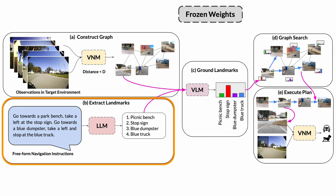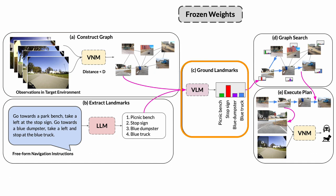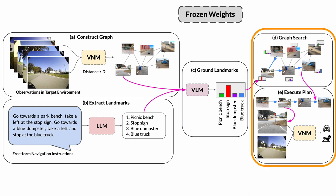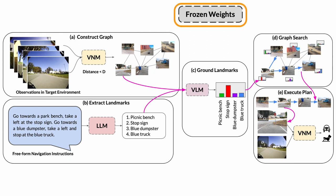Putting it all together: the free-form textual instructions are parsed by the language model into a series of textual landmarks, and the robot observations are processed by the navigation model into a topological graph. The VLM combines these by inferring a joint probability distribution that aligns the two modalities. The score is used by a novel graph search algorithm that derives an optimal plan from the graph, which is then executed by the navigation model. The navigation model operates solely on the robot's egocentric images and no global information is used. Note that all models are pre-trained and deployed with frozen weights — there is no fine-tuning in the target environment.